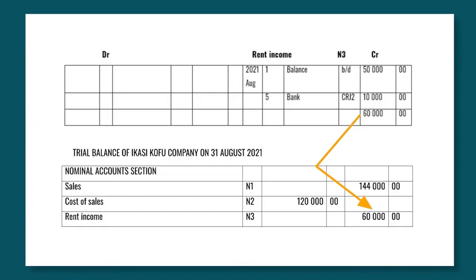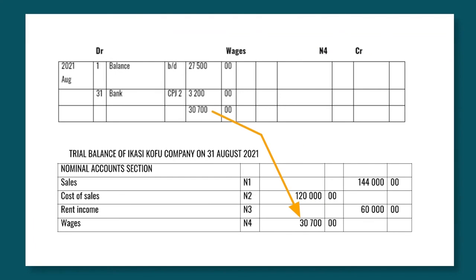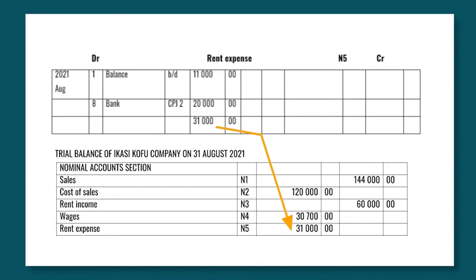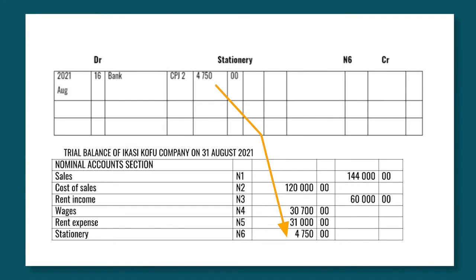Next is rent income — as income increases on the credit side, it will be placed there. Wages are an expense and will thus be debited. The next account is rent expense, which also increases on the debit side. The last account is stationery, which will also be posted on the debit side.